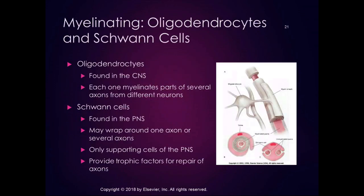The myelinating glia are the oligodendrocytes and the Schwann cells. Oligodendrocytes are found in the central nervous system, and each one myelinates parts of several axons from different neurons — wrapping around and insulating many different axons. When we have problems with oligodendrocytes, it results in demyelination and the formation of plaques, which is called multiple sclerosis. Because oligodendrocytes myelinate parts of several different axons, multiple sclerosis can have many different symptoms varying from person to person depending on which axons are affected.